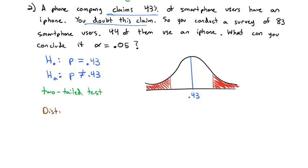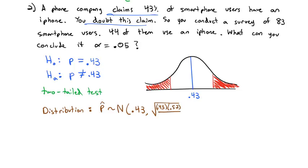The distribution of the proportion — we know that the proportion of our sample will be normally distributed. We're going to use the null hypothesis value around the claim of 0.43, with a standard error of 0.43 times q (1 minus 0.43 is 0.57), over the sample size. Here we did a survey of 83 people. So our proportion is normally distributed with a mean of 0.43 and a standard error of 0.0543.